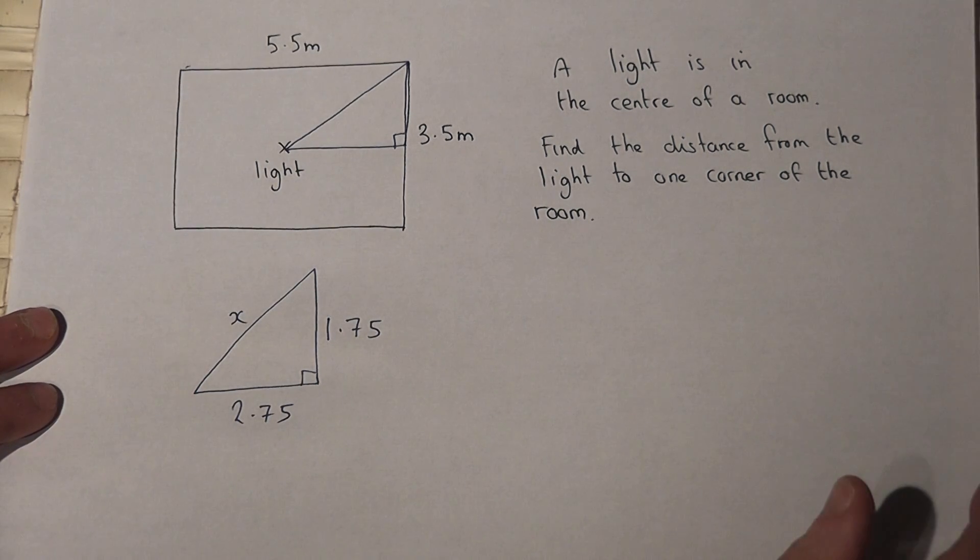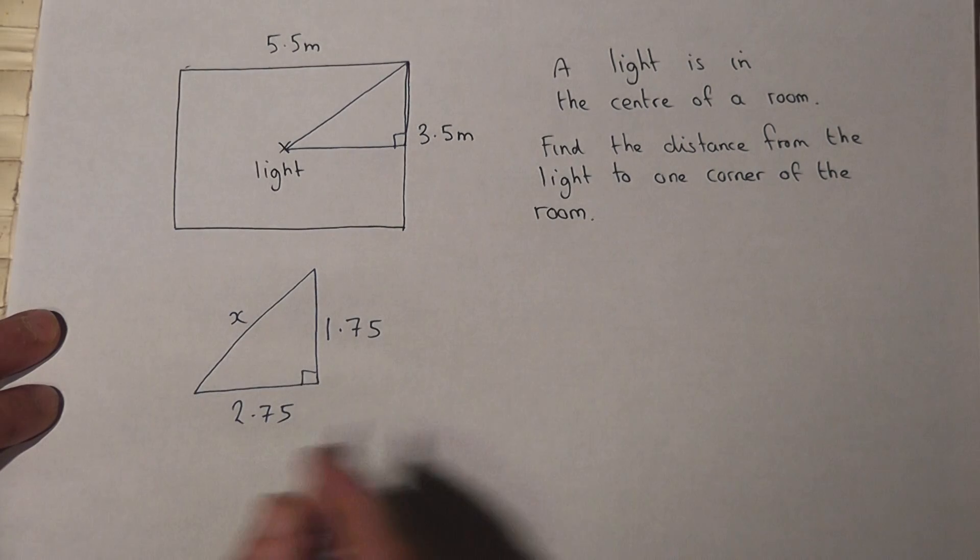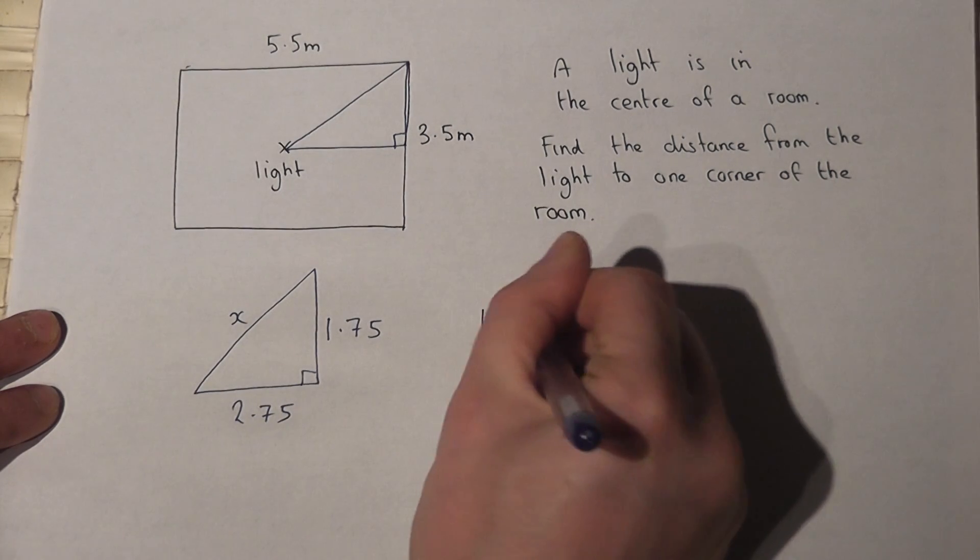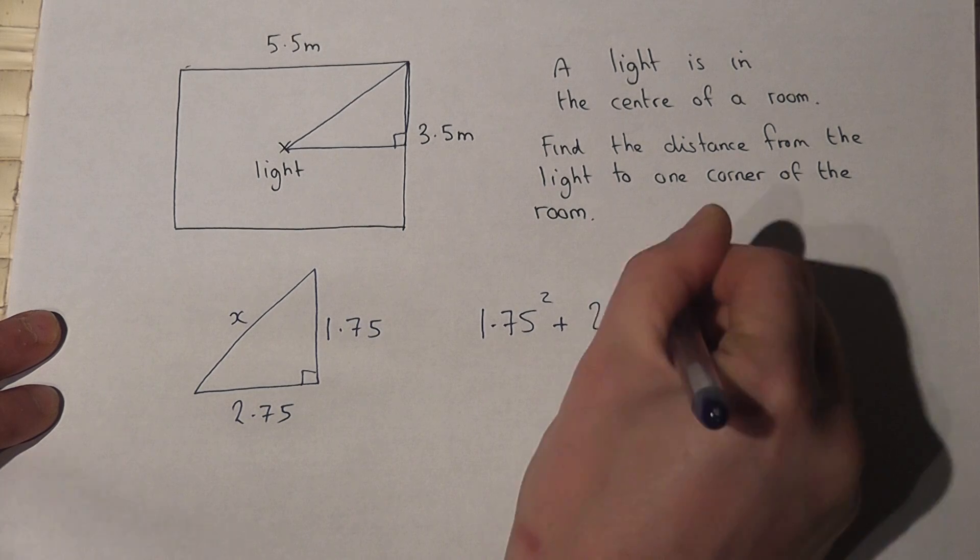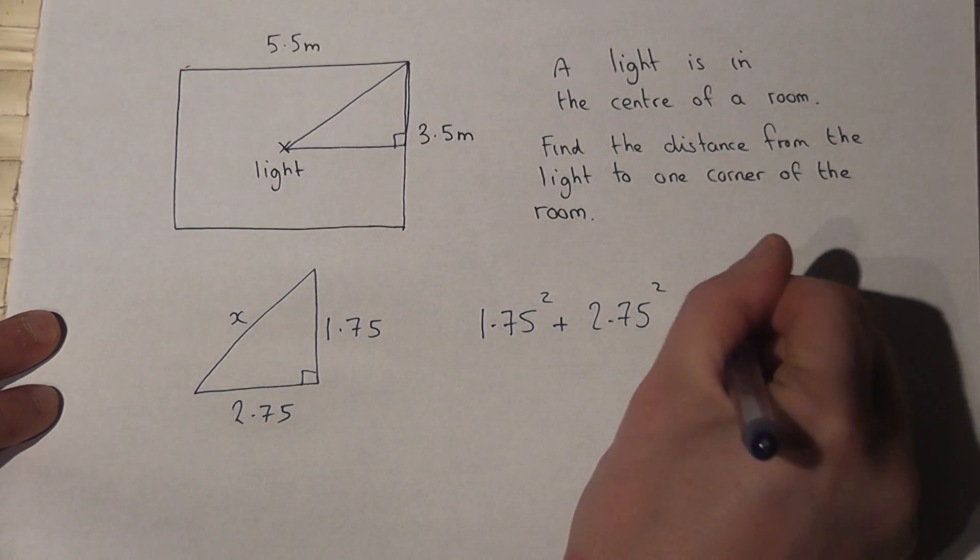Now Pythagoras tells us because this is a right-angled triangle that 1.75 squared plus 2.75 squared must equal x squared.